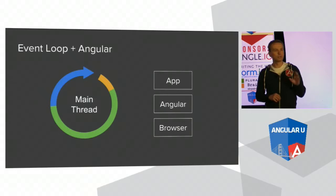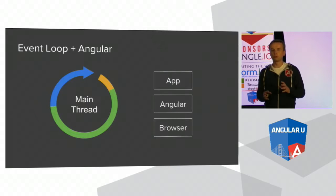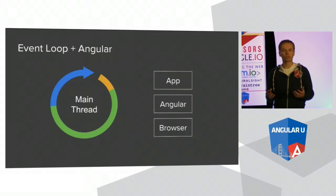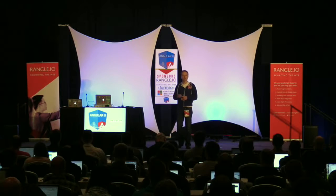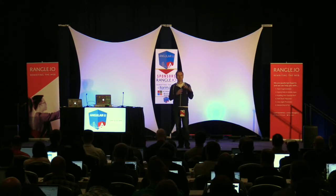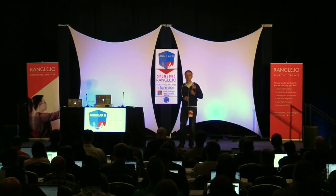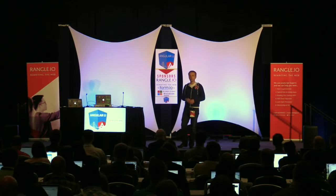When there are many things happening in your application, events have to be queued up and executed one at a time. This creates latency and bottlenecks — this is when we see the unpleasant user experience we're trying to avoid. In a typical Angular application, we have three entities fighting over this scarce resource: the application itself doing business logic, data fetching, and transformations; the framework doing internal bookkeeping, providing services, model diffing, and DOM manipulation; and the browser, which takes all DOM mutations and transforms them into something visible to the user by recalculating layout and repainting. Additionally, garbage collection can also be a significant factor.